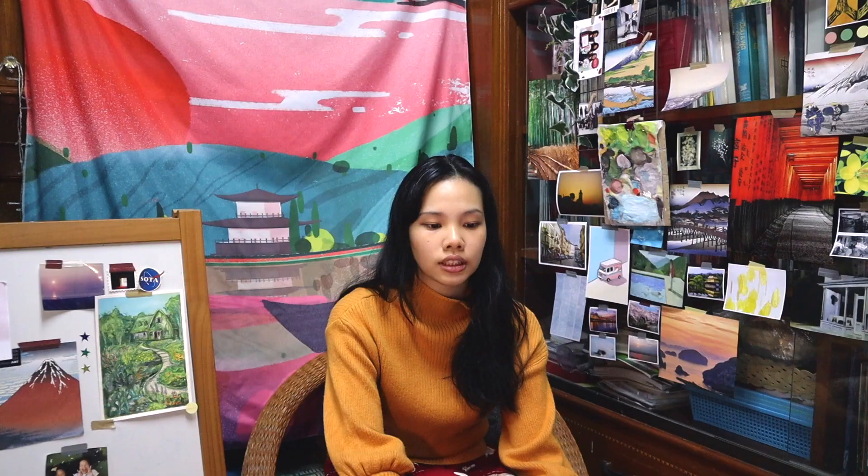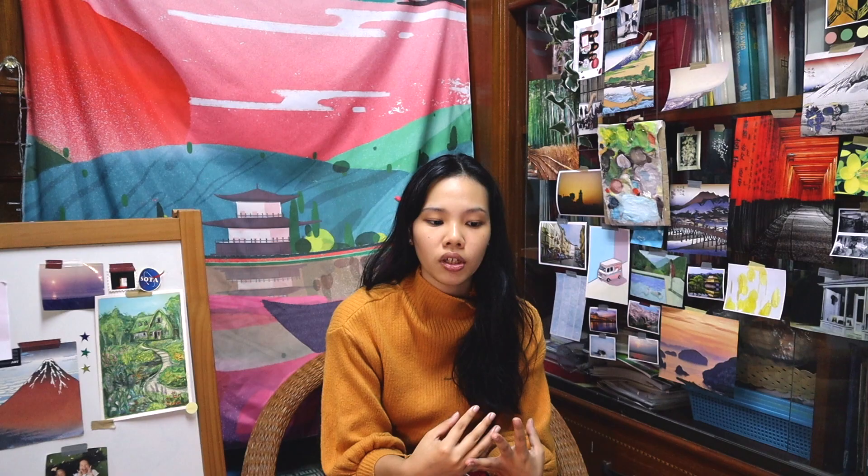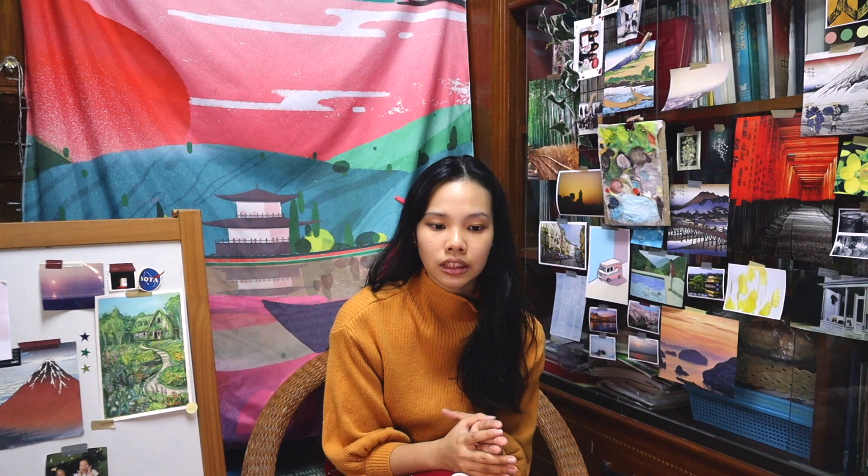The first three works — Imprint, Y, and Migration — talk about the idea of migration and Thai migrants in a larger sense, or the notion of migrating itself. Moving on to the second half of my body of works, I'll be talking about the Thai enclave and how, after moving to Singapore, migrants begin to form a community.